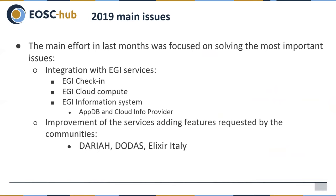In the last year our main efforts have been integrating with other EOS services, mainly EGI services. We have been integrating with EGI Check-in, EGI Cloud Computing to enable deploying virtual machines on top of the federated infrastructure, and with the EGI information system through AppDB and Login for Provider. This enables easy access to information for users to select the available sites and images. Some improvements have been requested by communities including TERIA, DODAS, and Elixir Italy.